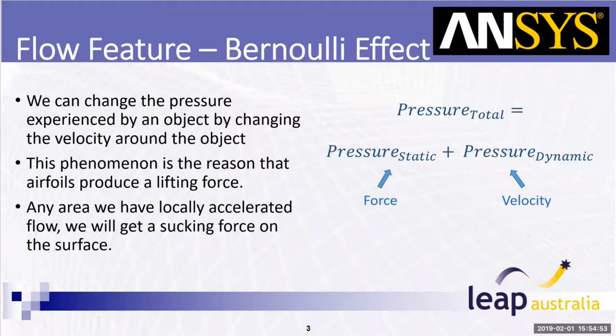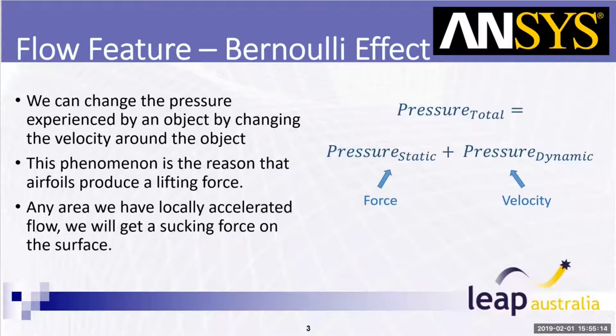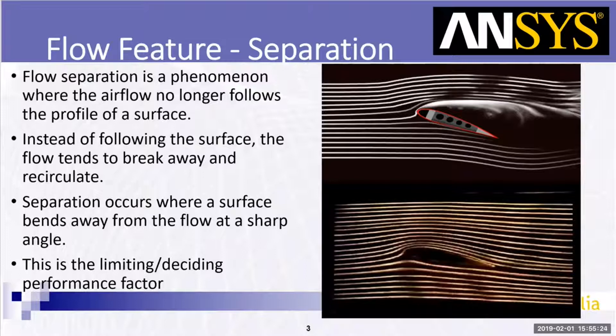We can increase or decrease the pressure in this way. Looking at the streamlines around an airfoil that are staying attached — in the bottom picture — the streamlines that go over the top have to travel further than those around the bottom. So that air travels faster, which means the static pressure has to go down. That's how we create lift — the resultant force on the wing will be upward.